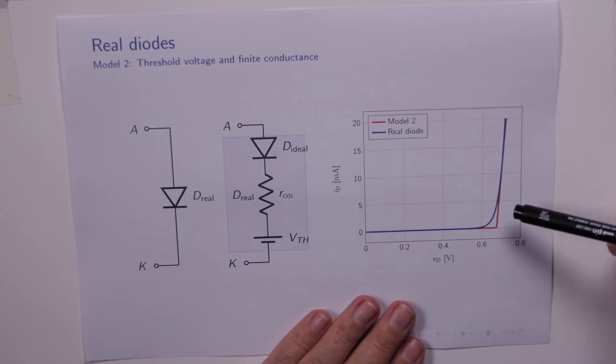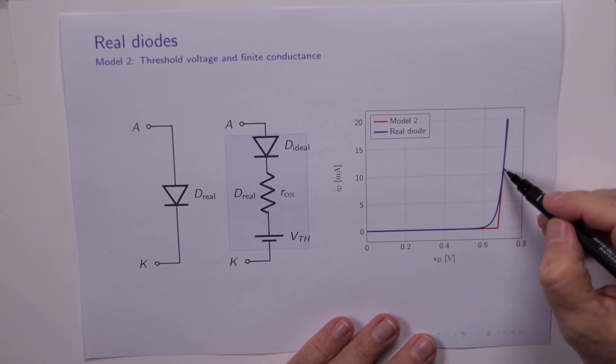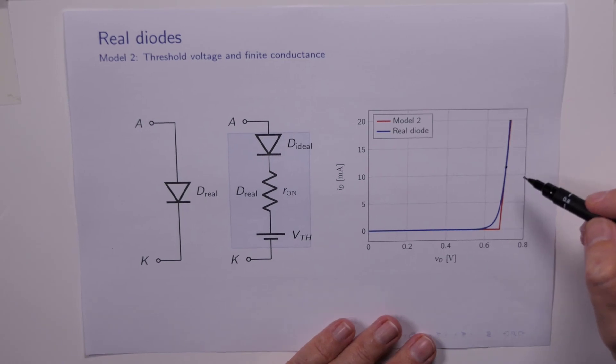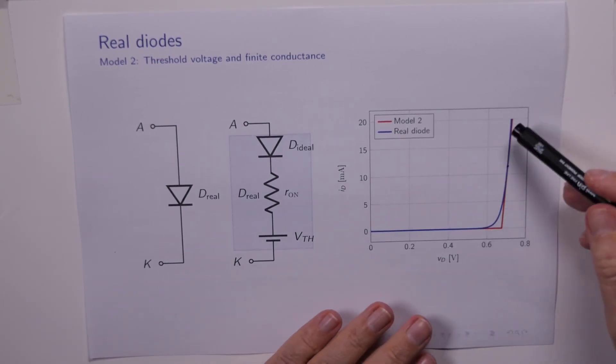Now the way we normally do this is at the operating point, which if I eyeball this, looks to me to be around about here somewhere. At the operating point, we want the model and the diode to coincide so they have the same current and voltage. And we also want the model to have the same slope as the real diode at that point. And then we've done a pretty good job.